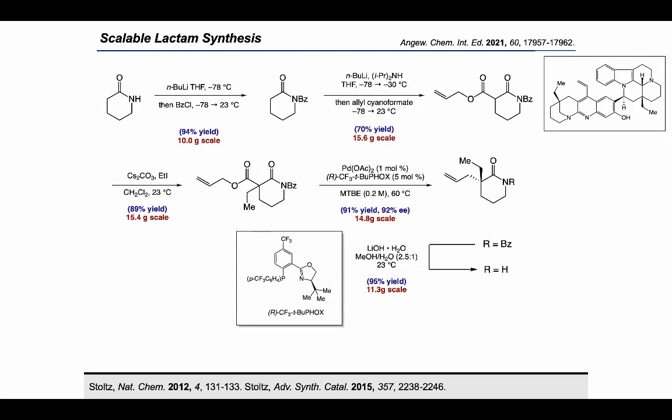In a forward sense, we successfully prepared more than 10 grams of the enantioenriched quaternary lactam building block. Starting from a commercially available delta-lactam, we first protected the lactam with a benzoyl group, followed by acylation and alkylation to provide the allylic alkylation substrate. Using only 1 mol% palladium(II) acetate, the reaction afforded the benzoyl-protected lactam in 91% yield and 92% ee. Benzoyl cleavage then completed the five-step sequence to give the desired lactam enantioselectively.